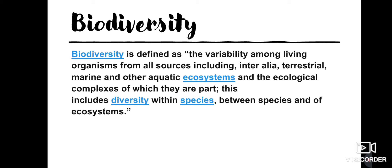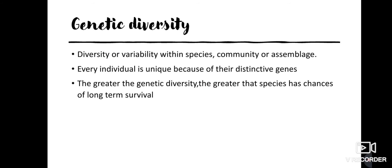The three types are: diversity within species, that is genetic diversity; between species, that is species diversity; and of ecosystem, that is ecosystem diversity. Genetic diversity is the diversity or variability within a species or community. For example, all human beings belong to the species Homo sapiens — homo is the genus and sapiens is the species — yet we show variety within the same species.